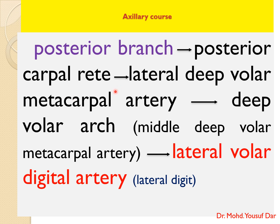It then descends downwards in the metacarpal region as the lateral deep volar metacarpal artery. This lateral deep volar metacarpal artery runs along the lateral border of the suspensory ligament, and above the fetlock joint it forms a deep volar arch with the middle deep volar metacarpal artery, which arises from the radial artery. The lateral deep volar metacarpal artery then reaches the lateral volar rete.